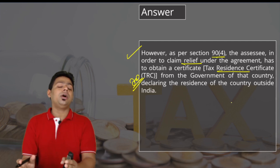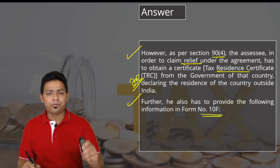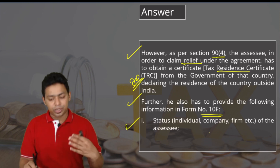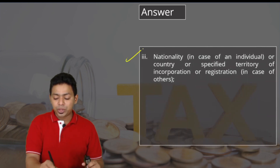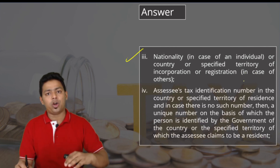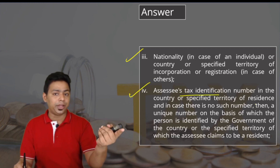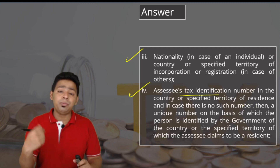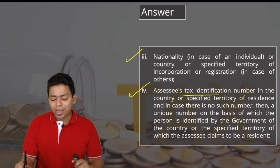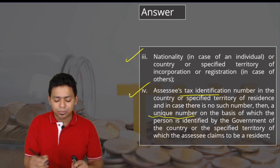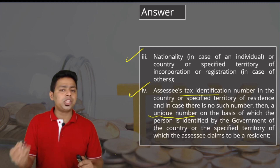To take the benefit of DTAA, you must provide a Tax Residency Certificate, as only then can the authorities verify that you are a genuine resident of that foreign country. Further, the assessee must provide the following information in Form 10F: status — whether individual, company, or firm; PAN if allotted; nationality — whether Indian or foreign national; and the assessee's tax identification number in the country of residence. In India we have PAN; in a foreign country they may have a unique identification number, tax identification number, or citizenship number — that number is required.